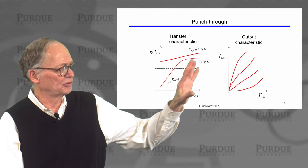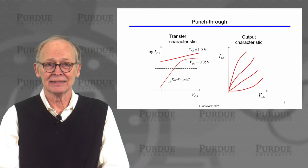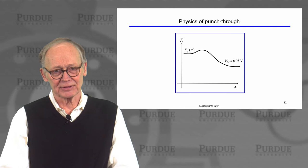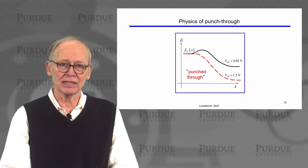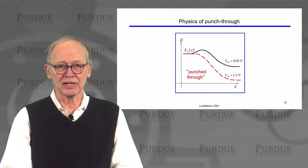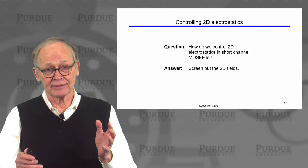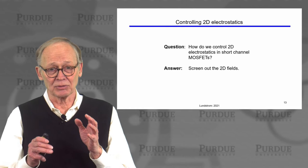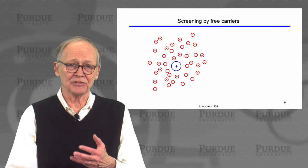Punch-through on a transfer characteristic and output characteristic yields very poor curves that render the transistor of no use in good circuits. From an energy band perspective, punch-through means we've pulled the barrier at the source down so far that current flows immediately with no help from the gate at all — electrons just spill out of the source into the channel and out the drain. There is no barrier to current flow. The question is: how can we make sure our transistors are not punched through?